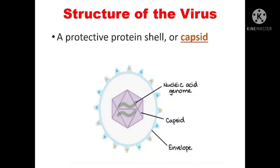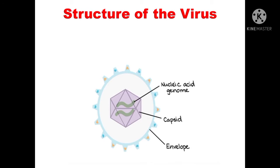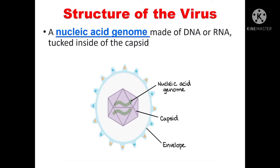Now let's talk about the structure of the virus. A protective protein shell of the virus is called the capsid. Inside the capsid is a nucleic acid genome made of DNA or RNA.